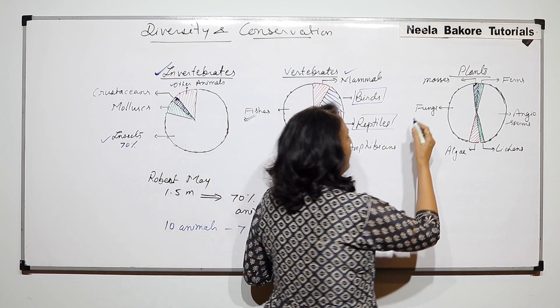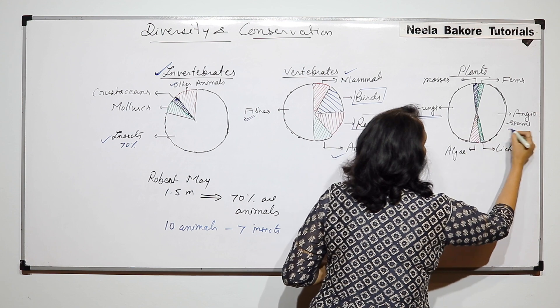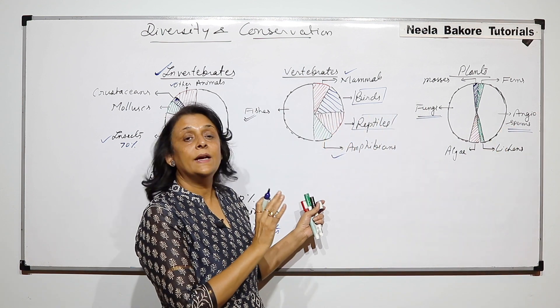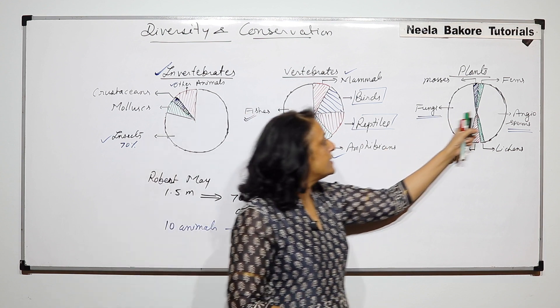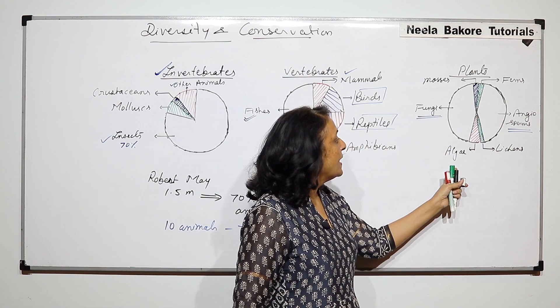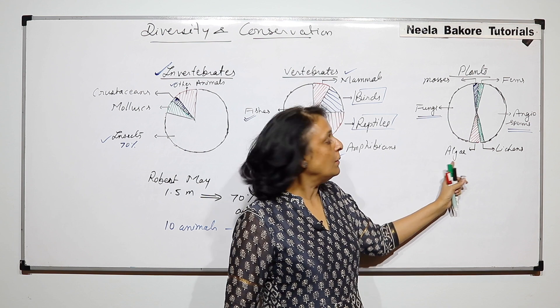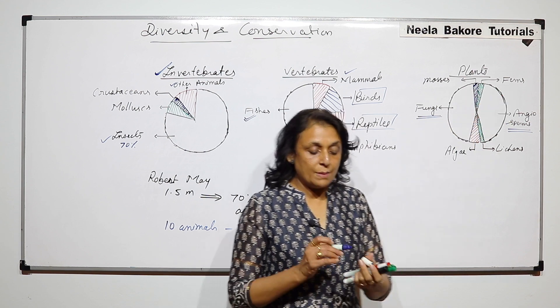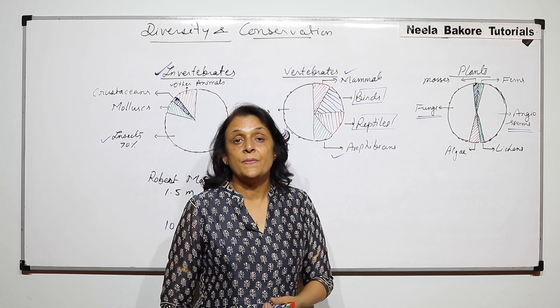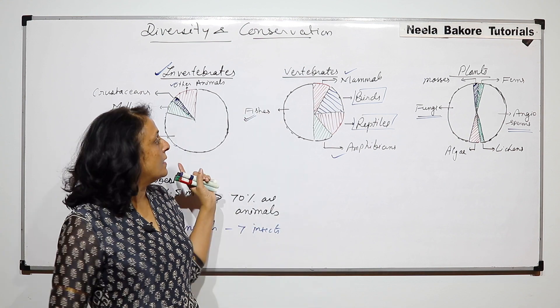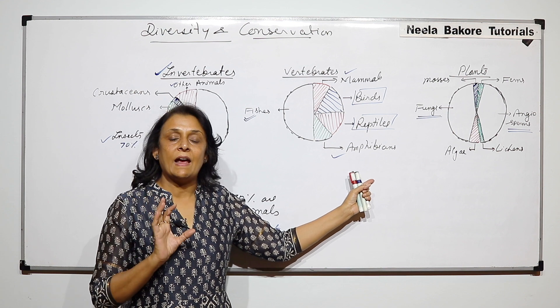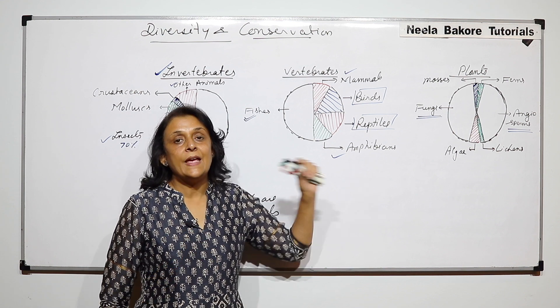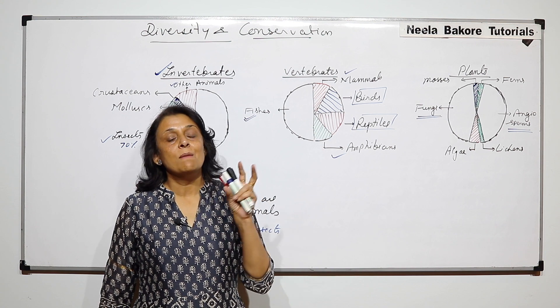And if we talk about only the plants, fungi and angiosperms they occupy more numbers as represented here. After that there is number of algae, lichens, mosses and ferns - their numbers are very less. Now this figure gives us an idea that if you are talking about a group of animals then which group would be maximum.